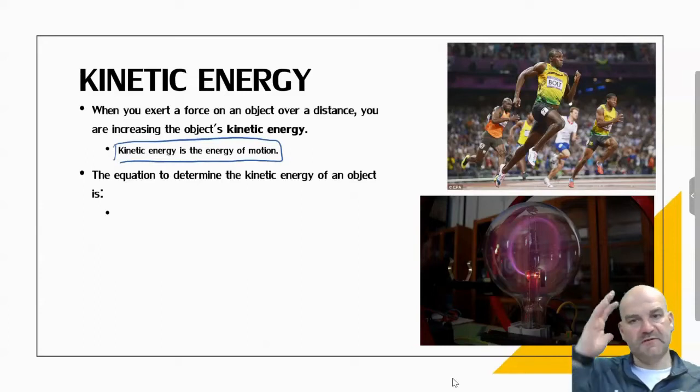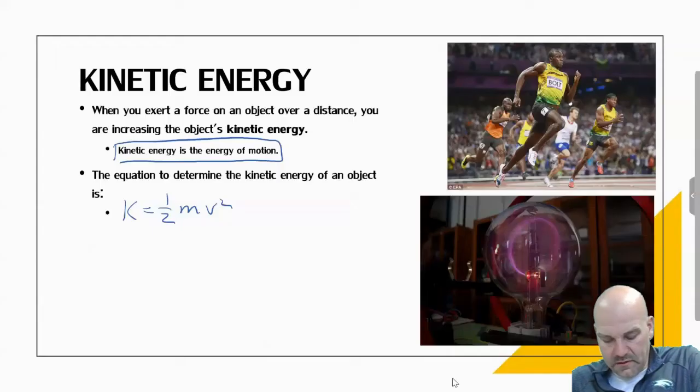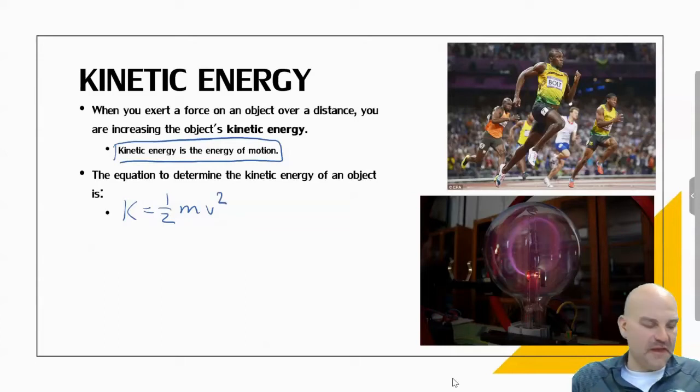Here's the expansion from middle school to high school. Kinetic energy is now given an equation, and it's one half mass times the speed squared. K = ½mv².